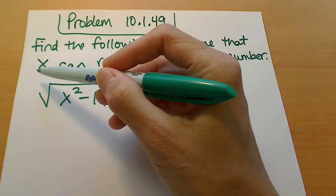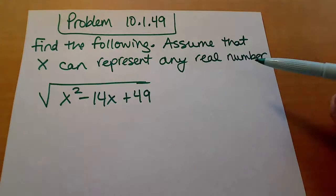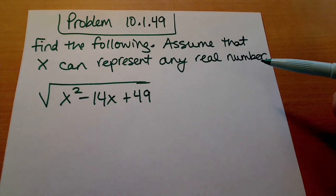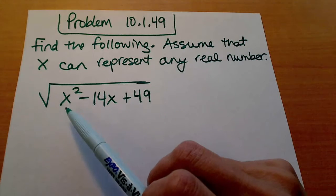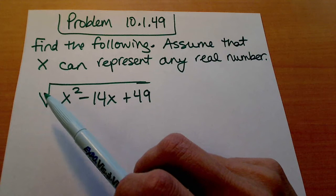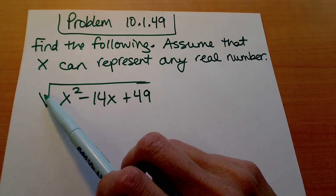What they're telling us with this direction right here, assuming that x can represent any real number, is that we do need to worry about the absolute value signs here because we don't know whether x is positive or negative, and we're dealing with an even index radical here.